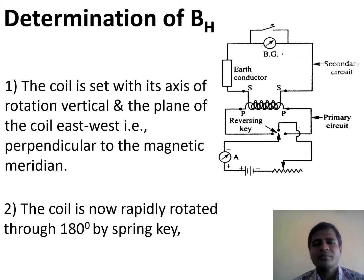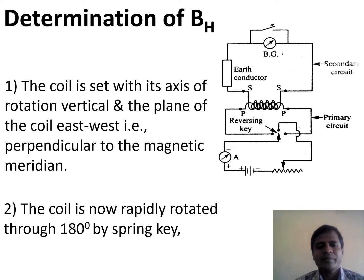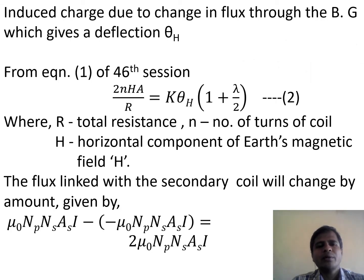The procedure to find out the horizontal component of Earth's magnetic field: firstly, the coil is set with its axis of rotation vertical and the plane of the coil is set to the east-west direction, that is perpendicular to the magnetic meridian. Secondly, the coil is rapidly rotated through 180 degrees by a spin key. After rotating through 180 degrees, the induced charge due to change in flux through the ballistic galvanometer gives a deflection theta H.